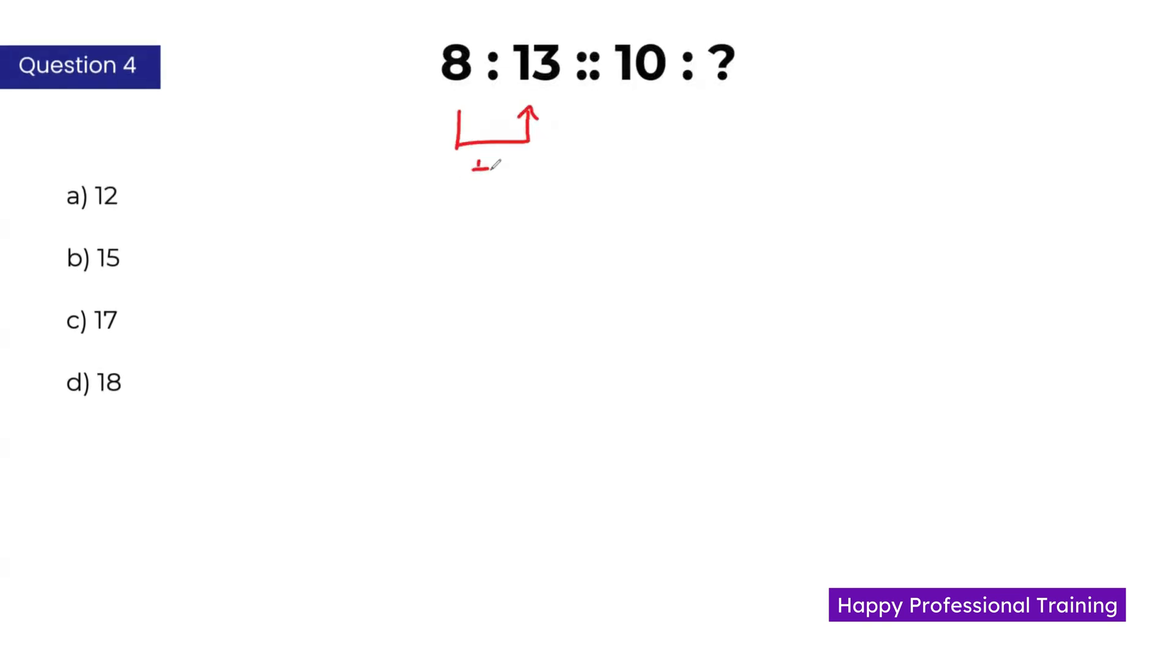We have got the second number by adding 8 with 5. 8 plus 5 is 13. Similarly, apply the same pattern here: 10 plus 5 is 15. B is the correct answer.